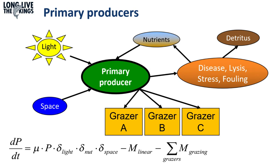Within the model, primary producers are governed by an equation where their growth is determined by biomass and their spatial distribution, and limited by light, nutrients, and space — in the case of benthic phytobenthos, for example — and decreased by linear mortality if specified in the model, and then by grazing.